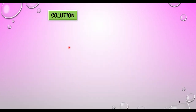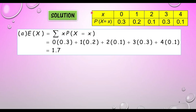For part (a), the expected value of X uses the formula: summation of x times the probability of each x. So we multiply: 0×0.3 + 1×0.2 + 2×0.1 + 3×0.3 + 4×0.1. Adding all these up gives E[X] = 1.7.